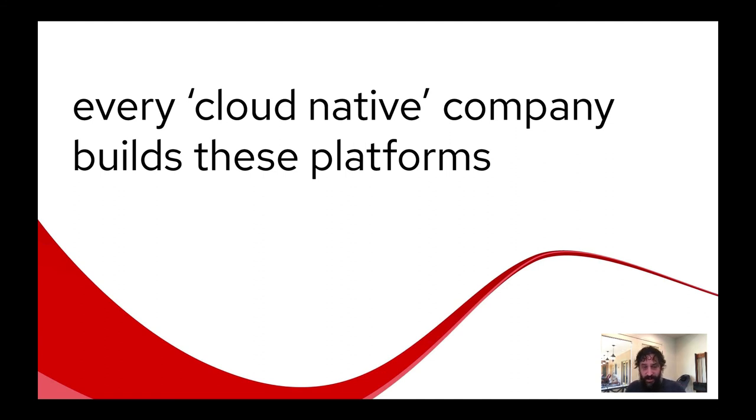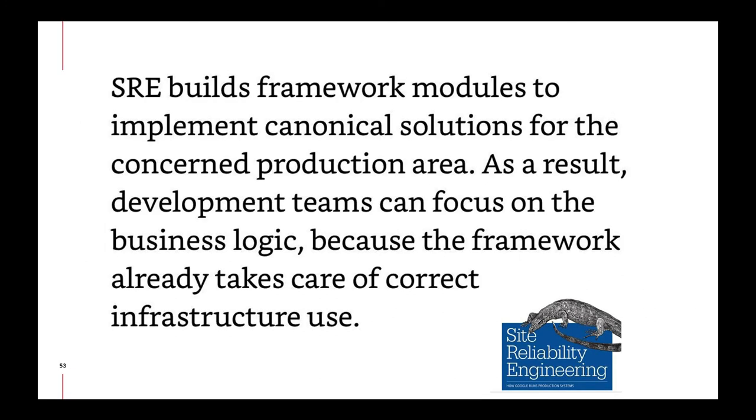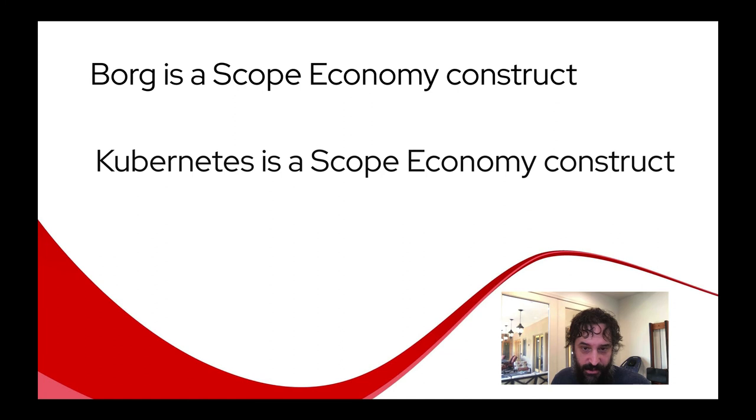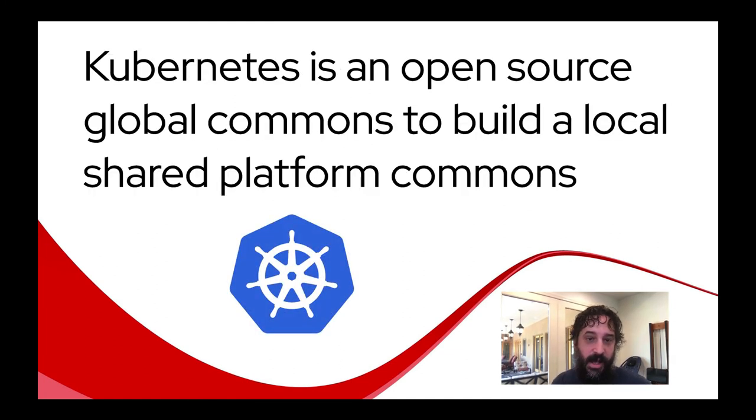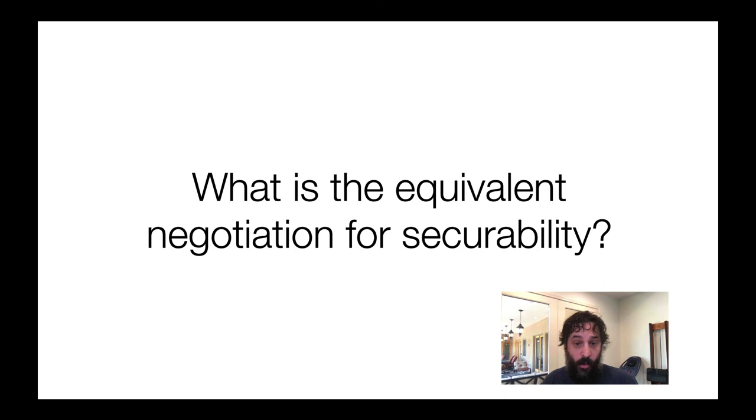So I'm going to argue, I'm going to assert every cloud native company, it builds these platforms, has built these platforms is building and extending these platforms because they have to, you can't get to the scale and keep the promises that you need to keep. If you're doing everything with this artisanal hand automation and security approach. So this is from the SRE book. This is the Google way. I'm not going to read the whole thing, but I'm just going to read this bottom part. So development teams can focus on the business logic because the framework already takes care of correct infrastructure use. This is Google explaining, in some degree, how they built their shared platform. That's straight from the SRE book. Borg is a scope economy construct. Kubernetes is a scope economy construct. Yay. I also think it's interesting to think about. Kubernetes is an open source global commons to build a local shared platform commons. And then establishing an SLO is a negotiation exercise between SREs and software engineers. So what is the equivalent negotiation for securability?